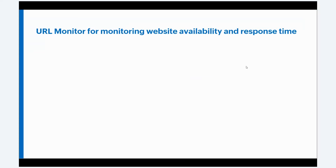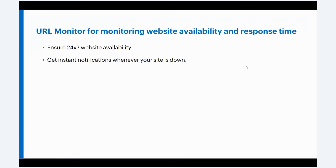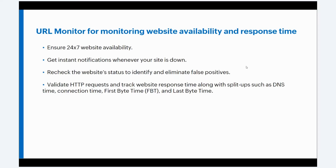To tackle and prevent problems like this, you can use Applications Manager's URL Monitor. It basically helps you ensure 24/7 website availability. It acts as a continuous URL monitoring service that keeps constant watch over a specific URL or webpage, and helps verify the availability of a specified HTTP and HTTPS URL. You can get instant notifications whenever your website is down. You can recheck the website status to identify and eliminate any false positives. You can validate HTTP requests and track website response time along with split-ups such as DNS time, connection time, first byte time, and last byte time.